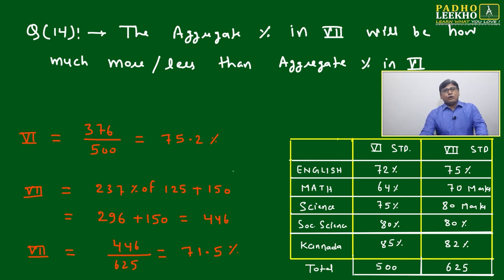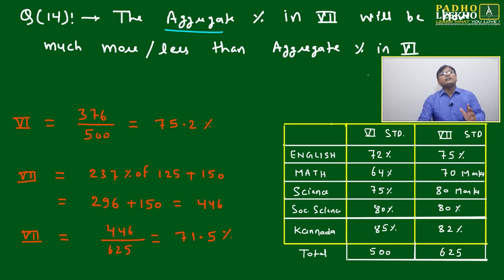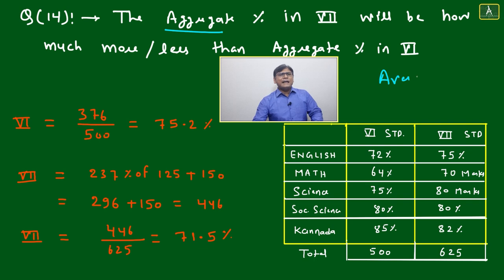We have seen almost all types of questions based on percentage data. Now we'll look at aggregate percentages in sixth and seventh standards. We can use average, but since we haven't introduced that yet, we'll use percentage. The purpose is to make this a percentage question, so we'll calculate by converting to individual marks, adding them, and taking out of the total.